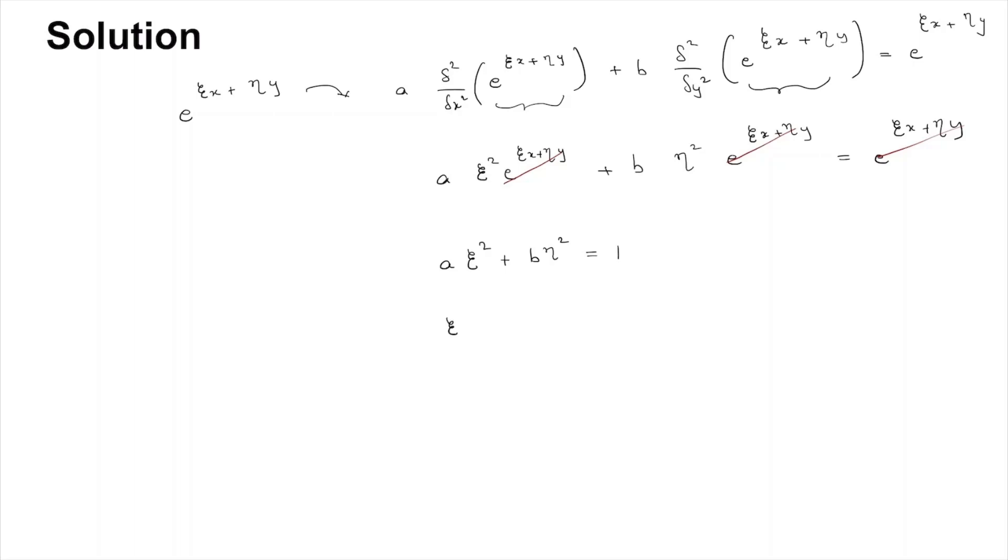The options given: for zeta = 1/√(2a) and eta = 0, we will get a·(1/√(2a))² + b·0².